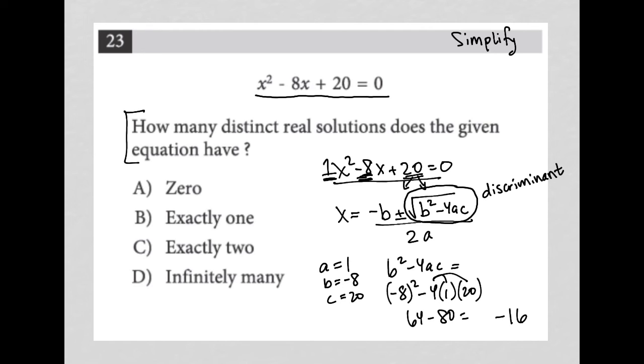Now, that negative 16 is here and technically under a radical. If I have a square root of a negative number, that means I'm going to get imaginary solutions. Anytime you take the square root of a negative, you get an imaginary. For instance, the square root of negative 16 is actually equal to plus or minus 4i.